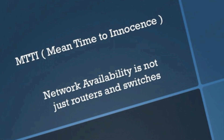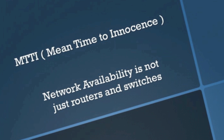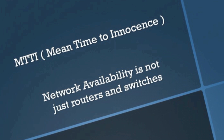So why do you care about this? As we all know, network availability is not just about routers and switches. How many times have we heard the words 'the network is down'? How often is the network actually down? The internet's down — how many of you have heard that? Sometimes what we're really concerned with is mean time to innocence — how long does it take you to prove that it's not actually you.